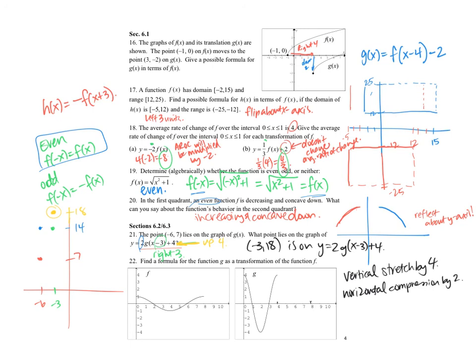And so that vertical stretch is that coefficient of f of x. So we can say g of x is equal to 4f of 2x. So this number here is our vertical stretch, and this number here is our horizontal compression. So that's that.